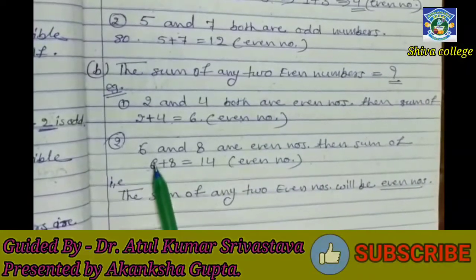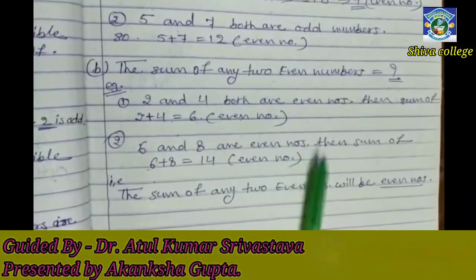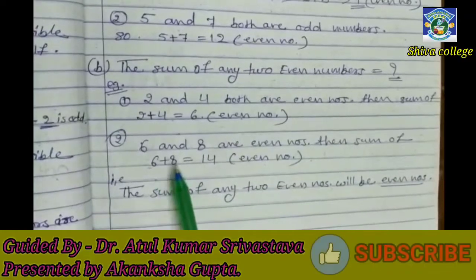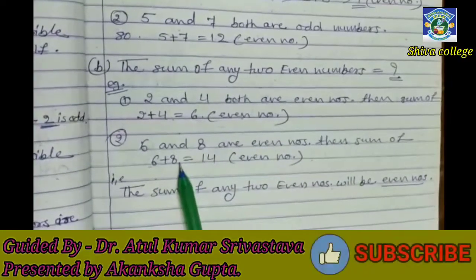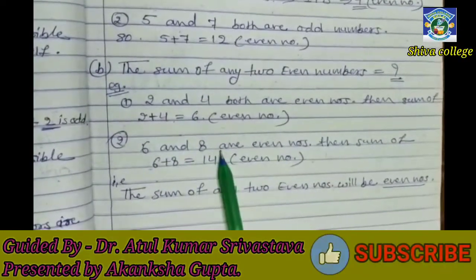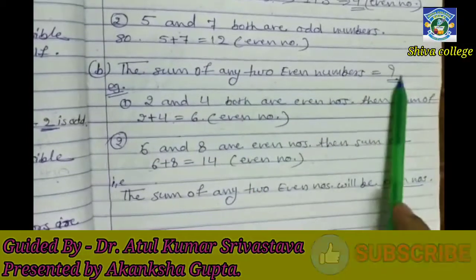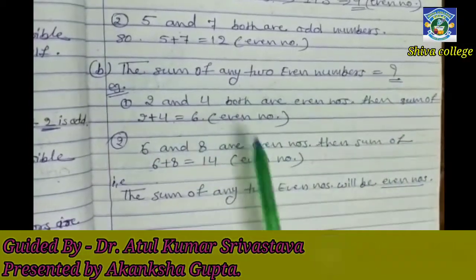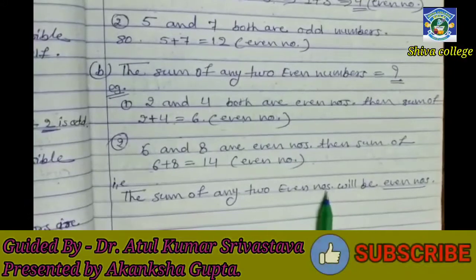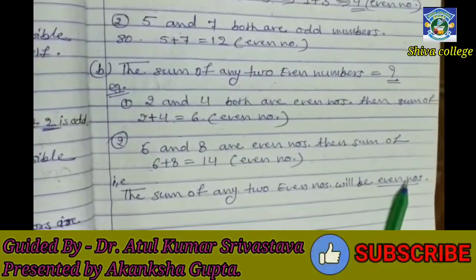Second example: 6 and 8 are even numbers. Sum of 6 and 8 will be 14. 14 is an even number. So this statement is true — the sum of any two even numbers will be even numbers.